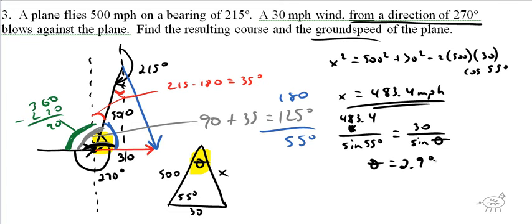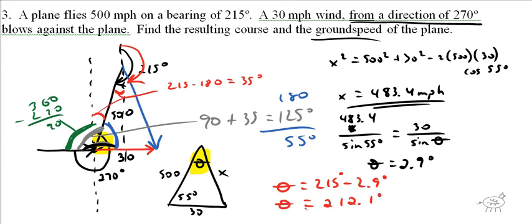Do we add or subtract that angle? Think logically — if the wind is pushing it to the right, it's going from 215 degrees to less of an angle. So our resulting course is 215 minus 2.9 degrees, which equals 212.1 degrees. Not bad. But the picture is everything — it's about 90% of the work. If you get the picture wrong, the whole problem is wrong.